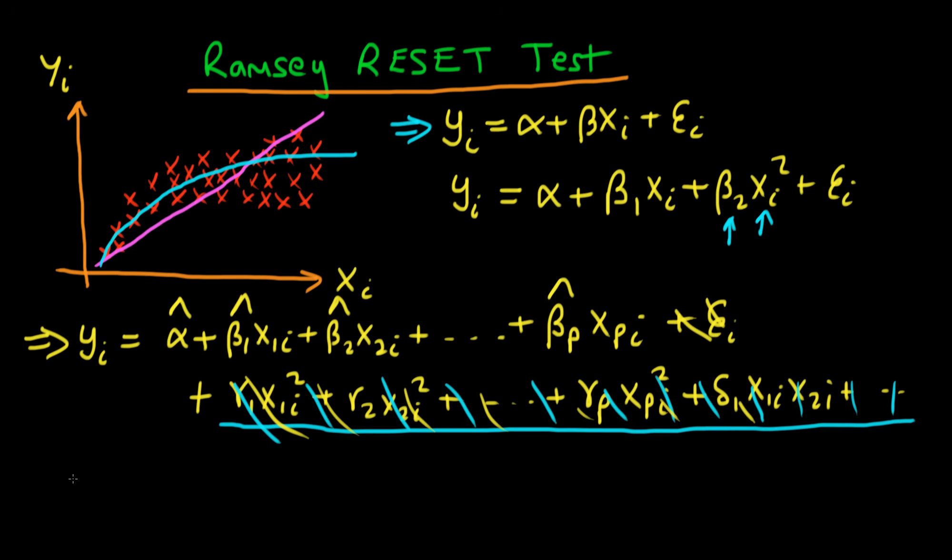And then what he suggested we should do would be to run a regression which is yi equals alpha plus beta 1 times x1i plus all the way up to our pth independent variable, so we've got beta p times xpi, plus gamma 1 times our fitted values of yi from the first regression. So that's our fitted values which we obtain by using the estimated coefficients from our first model. And we don't just include yi hat, we actually square it.